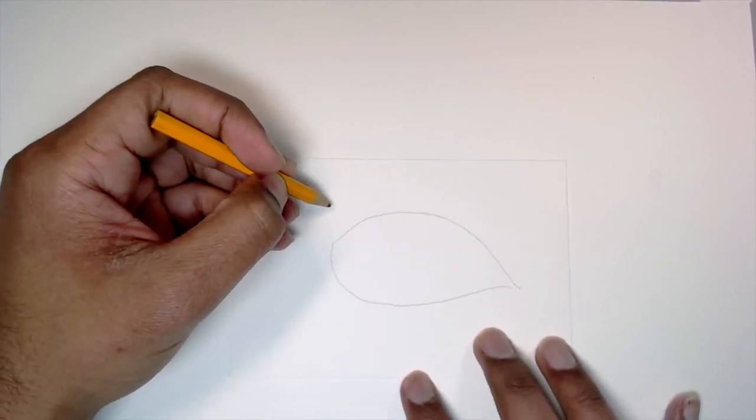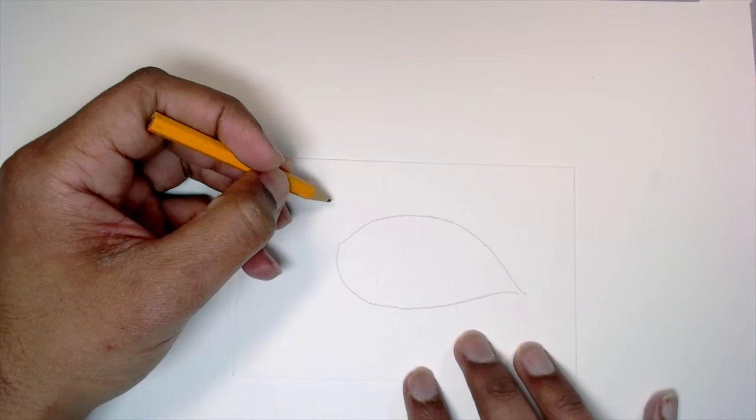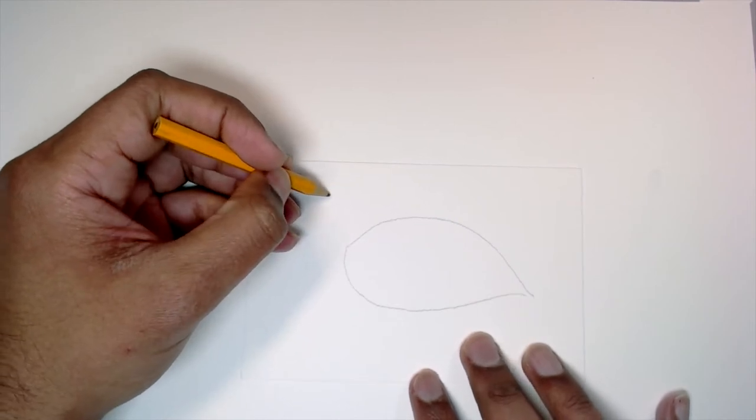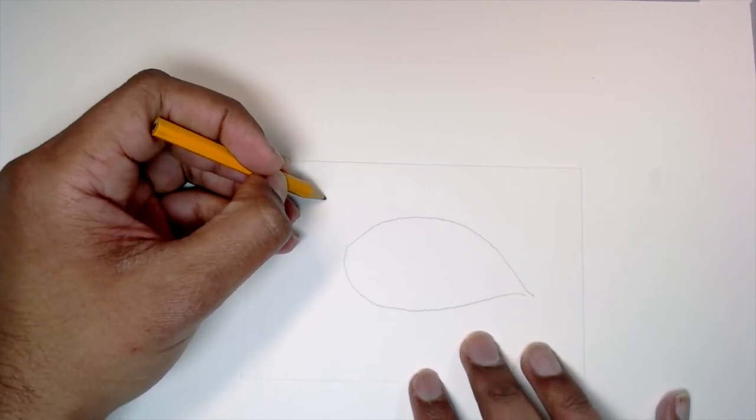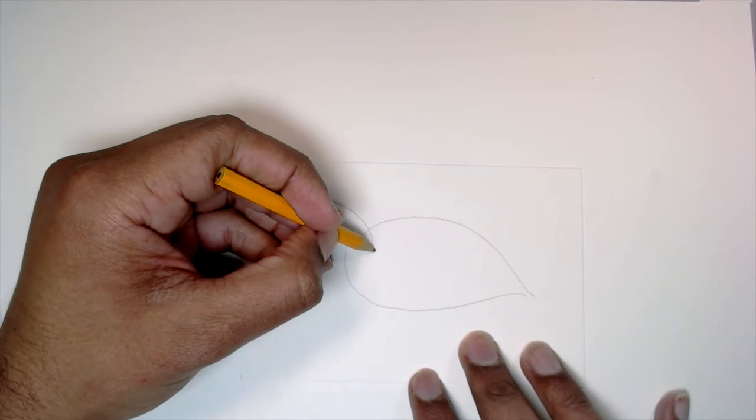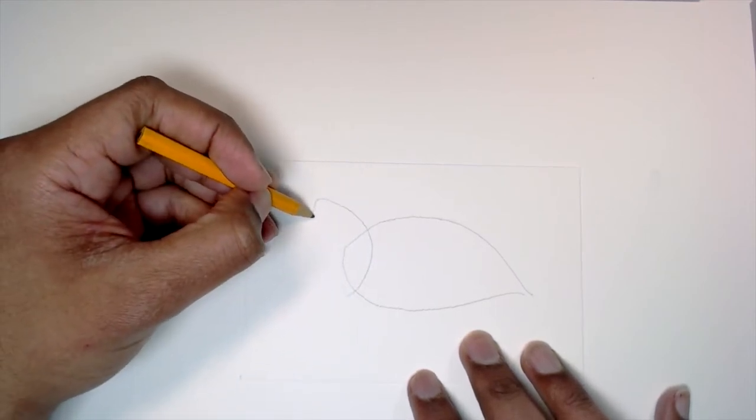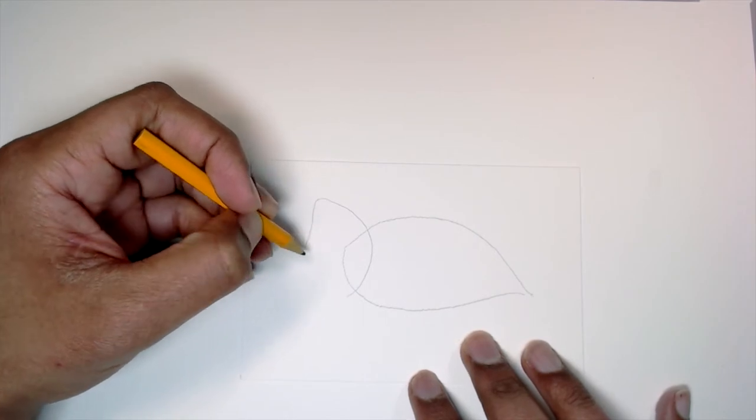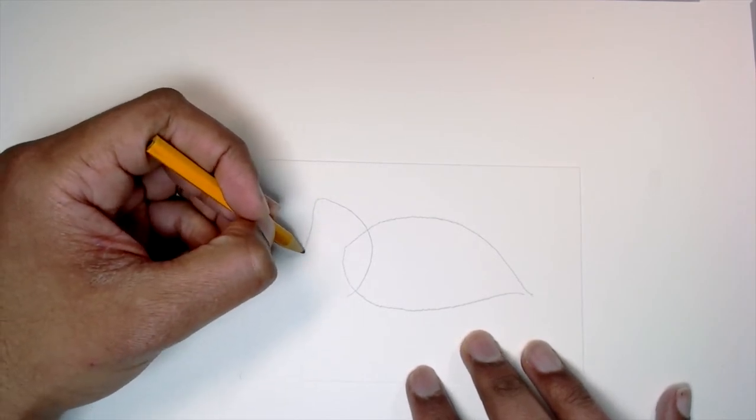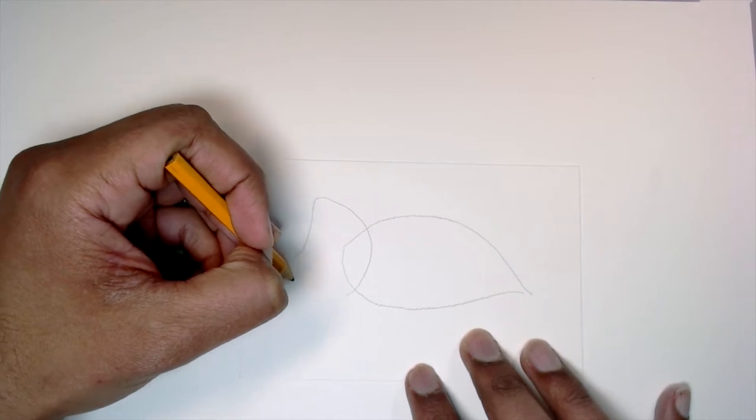And then I'll draw the head, and the head has a frill around it. So it looks like that. They look a little bit like rhinos. They have that frill.